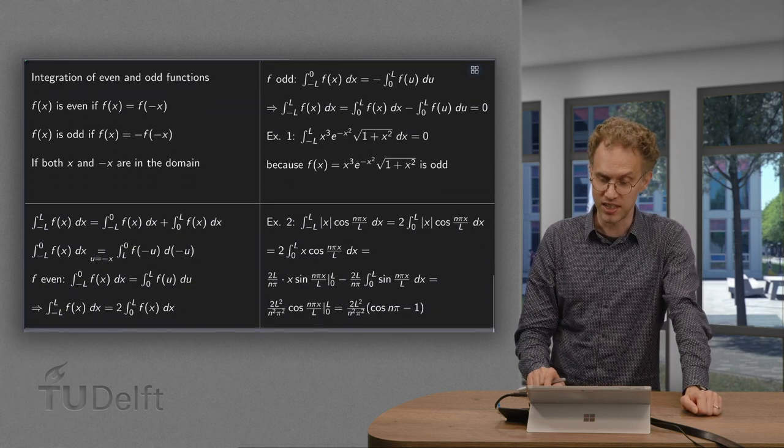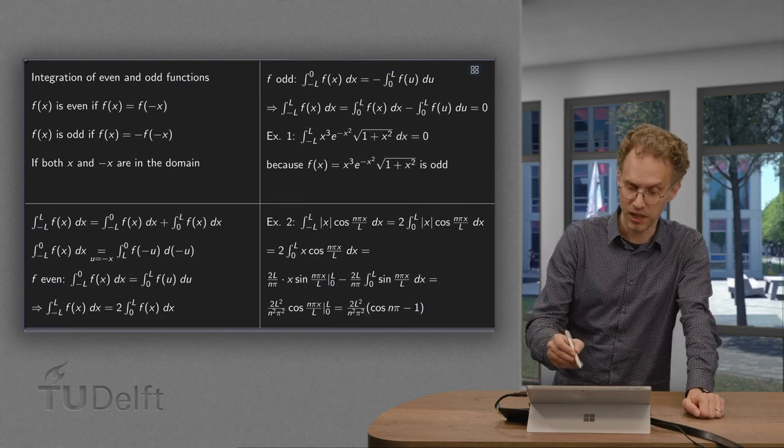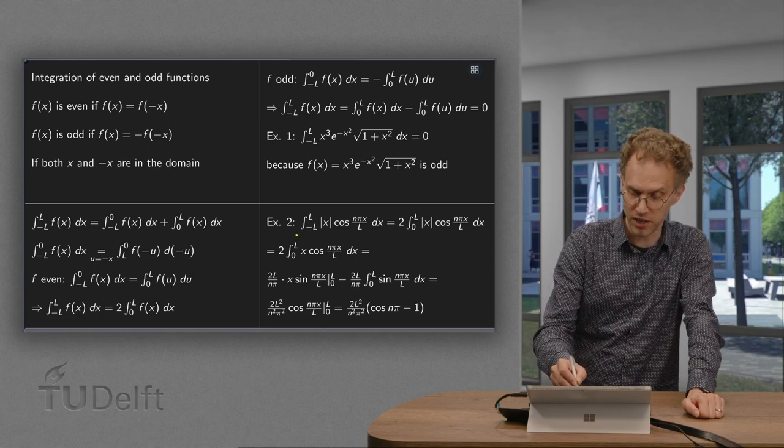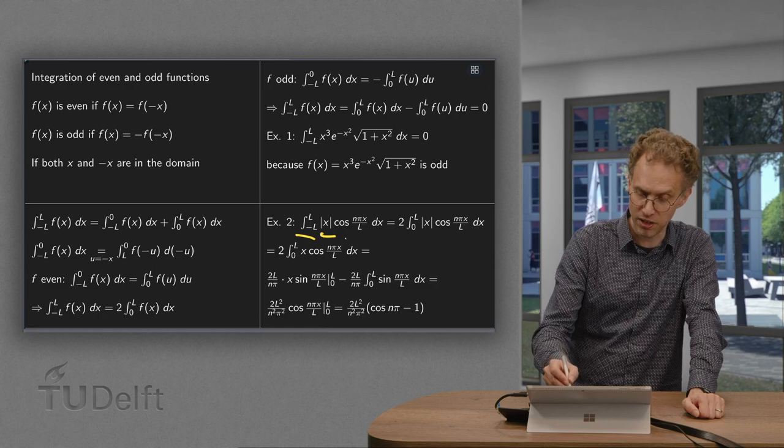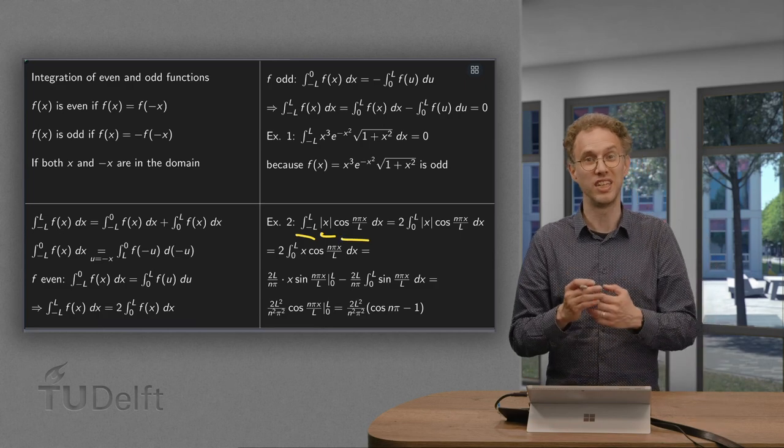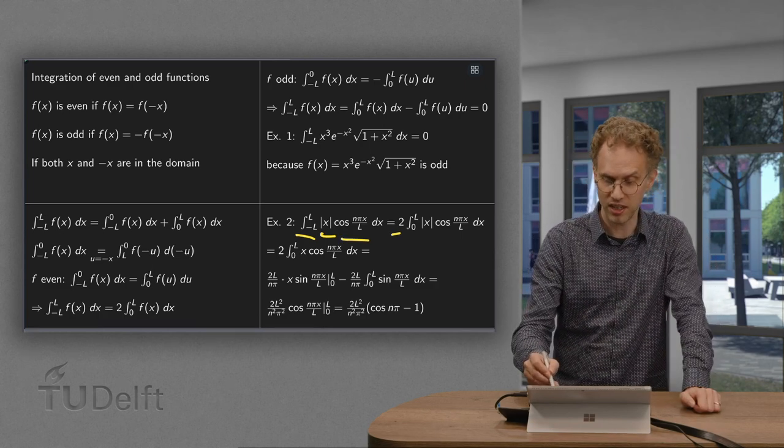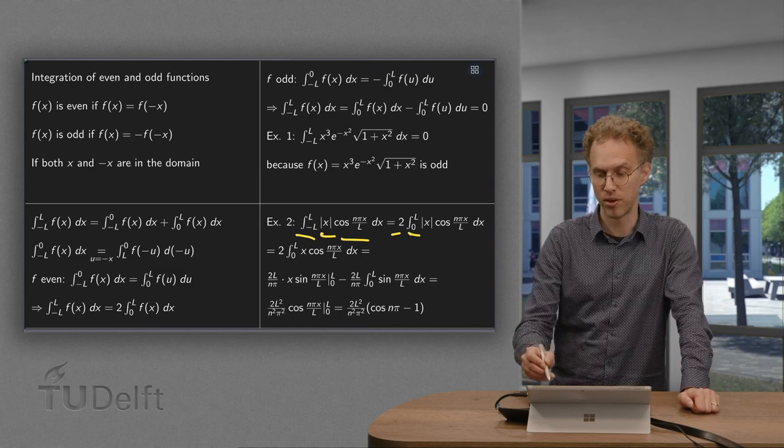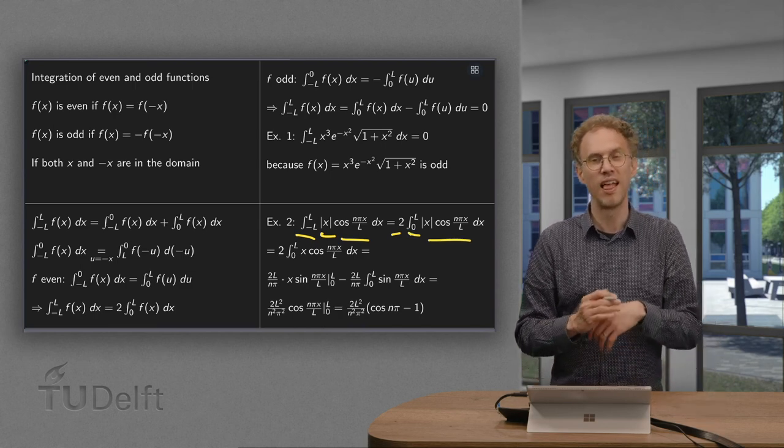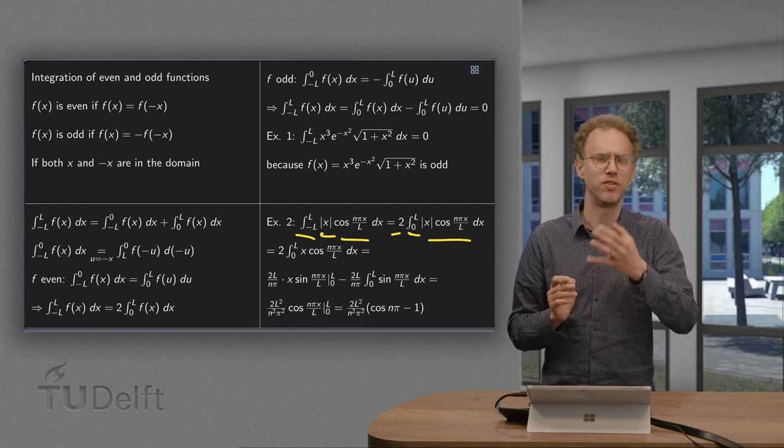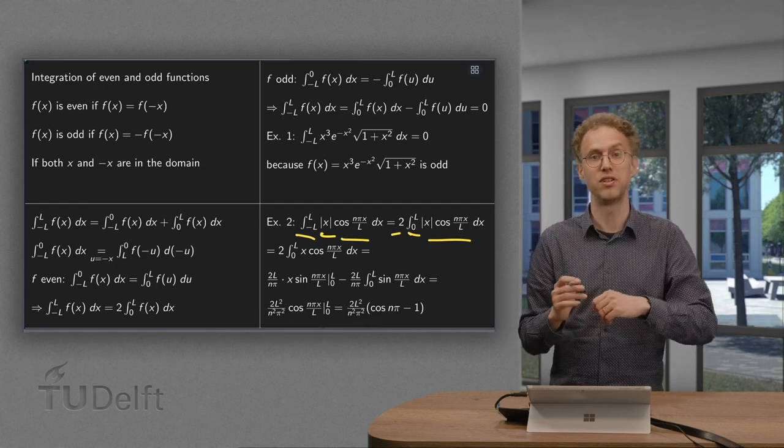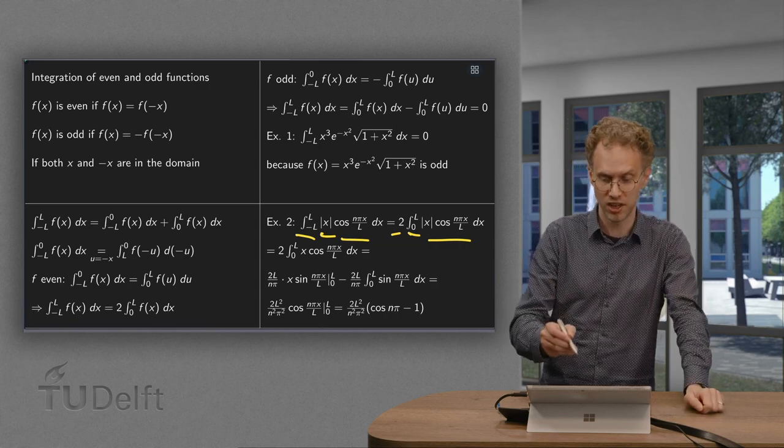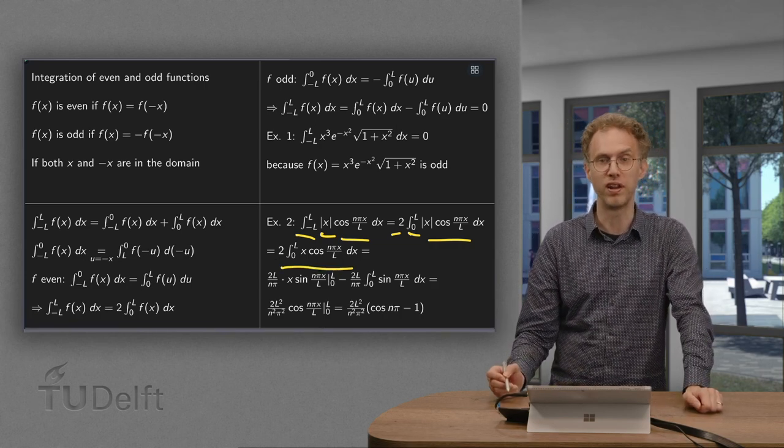Now the second example, there we want to integrate an even function from minus l to l, because absolute value of x is even, cosine is even, so this integral is twice the integral from 0 to l of this even function. And now this simplifies a bit, because we had this annoying absolute value, but now x is positive, so the absolute value of x is just x. So we have to compute this integral over here.